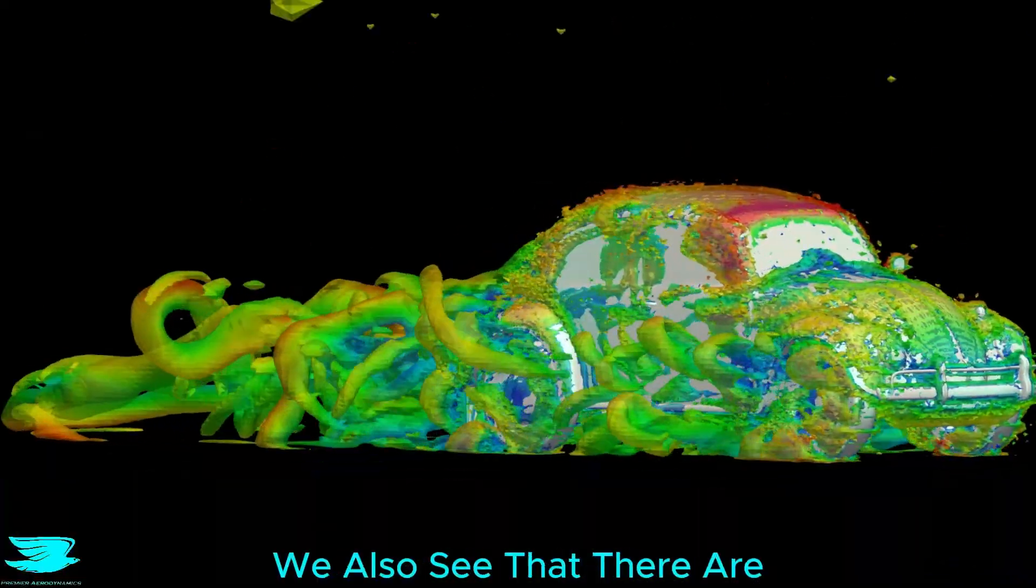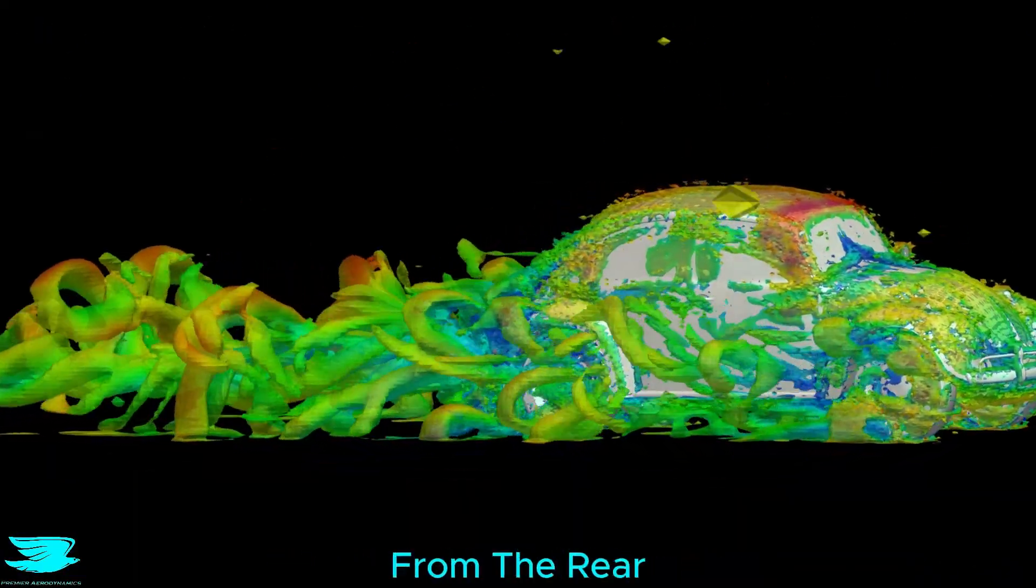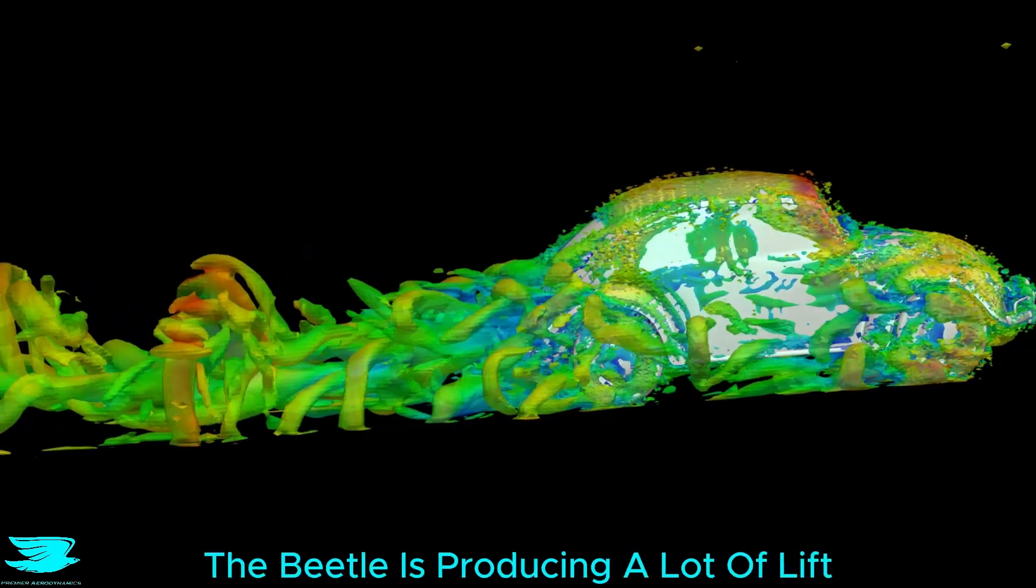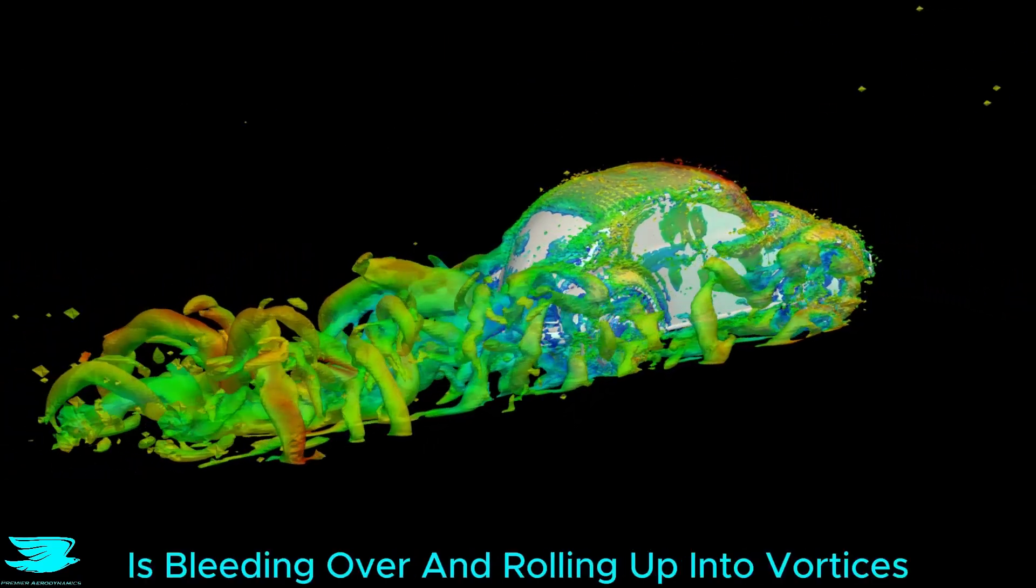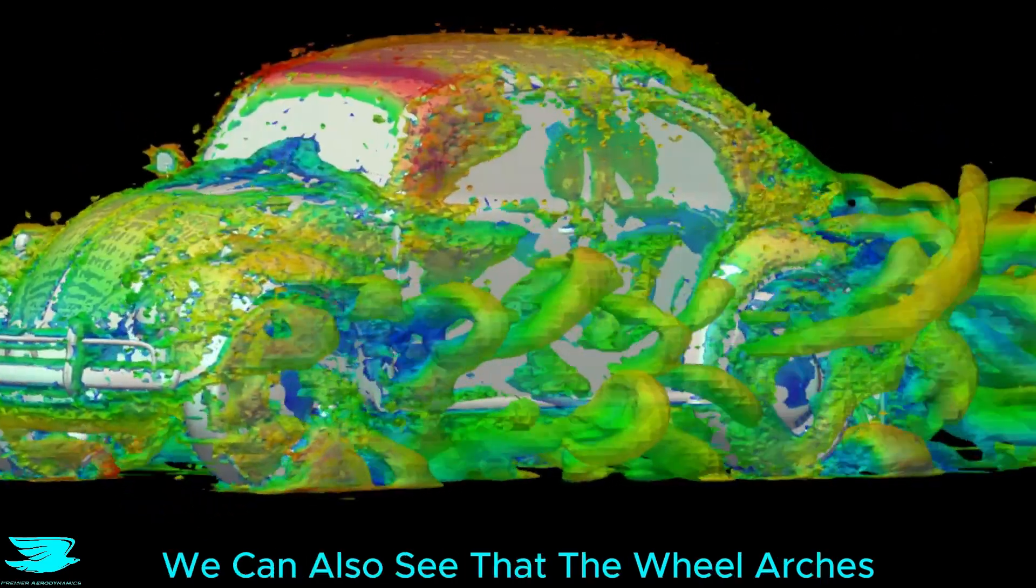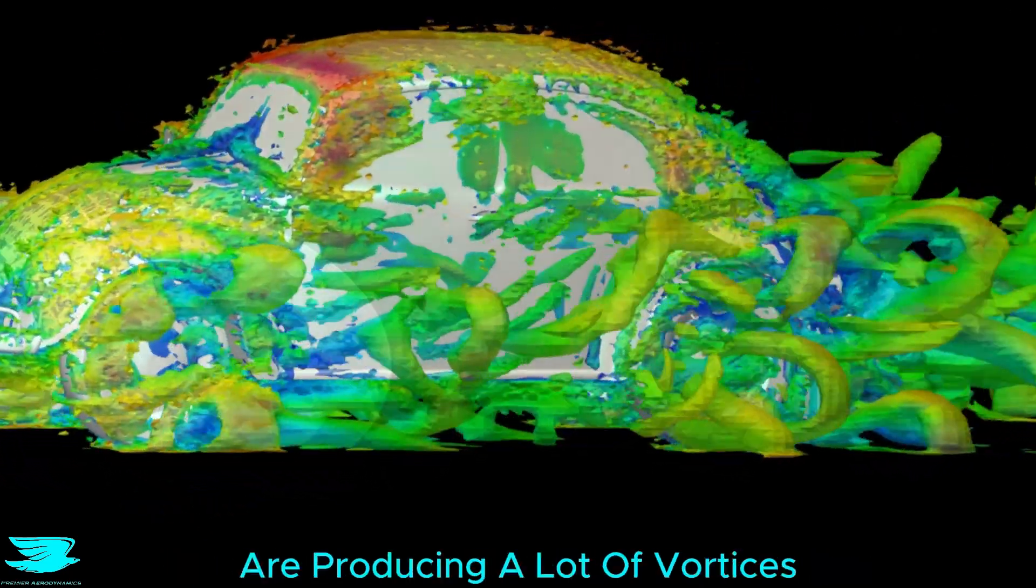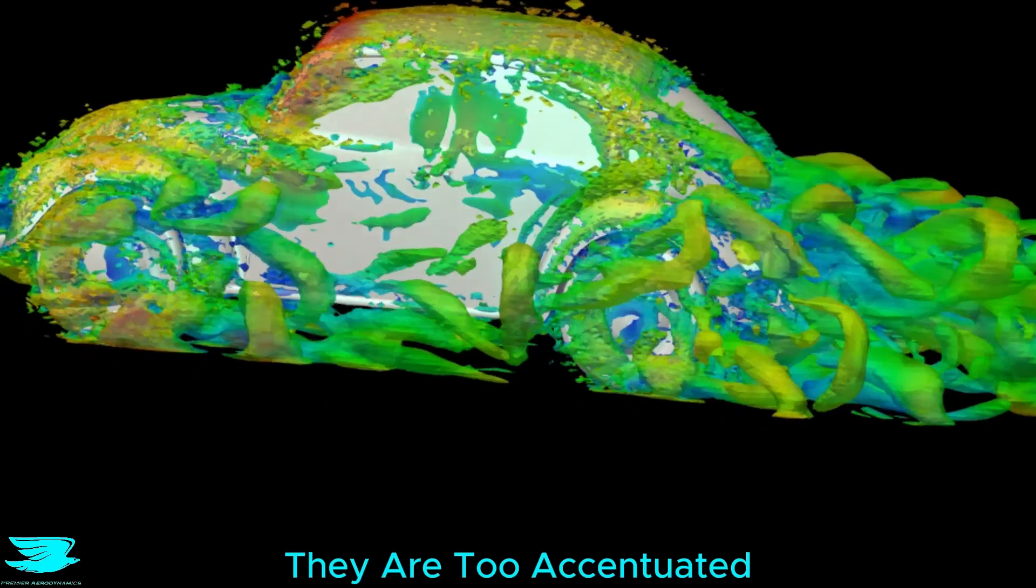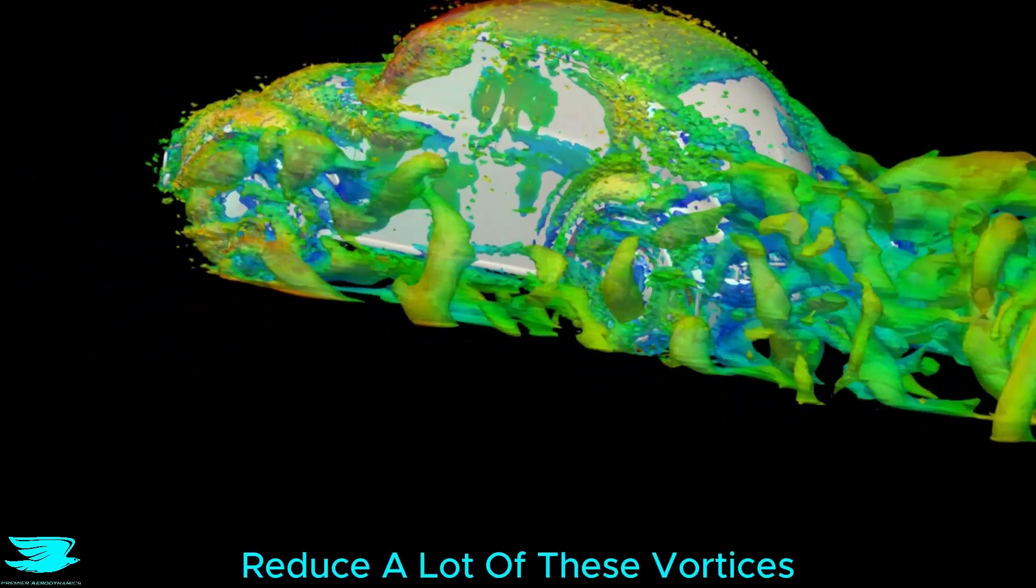From these vortices, we also see that there are a lot of vortices being shed from the rear. Many of these are because the Beetle is producing a lot of lift, so the flow from under the car is bleeding over and rolling up into vortices in a similar fashion to wingtip vortices. We can also see that the wheel arches are producing a lot of vortices, and that is because they are too accentuated. Turning them down would reduce a lot of these vortices.